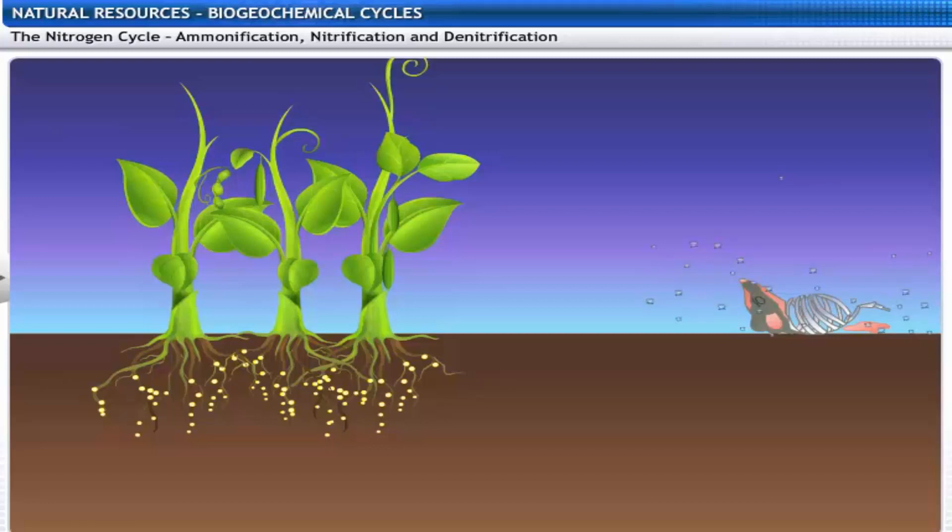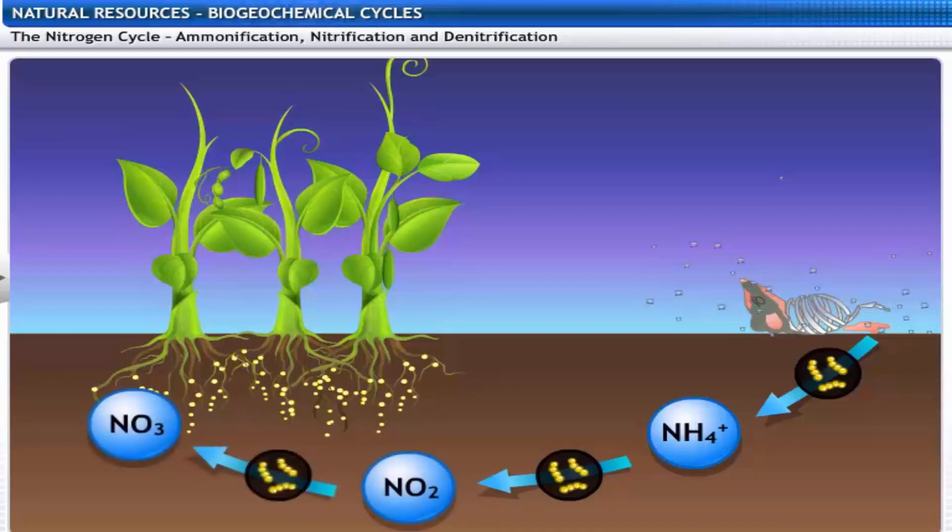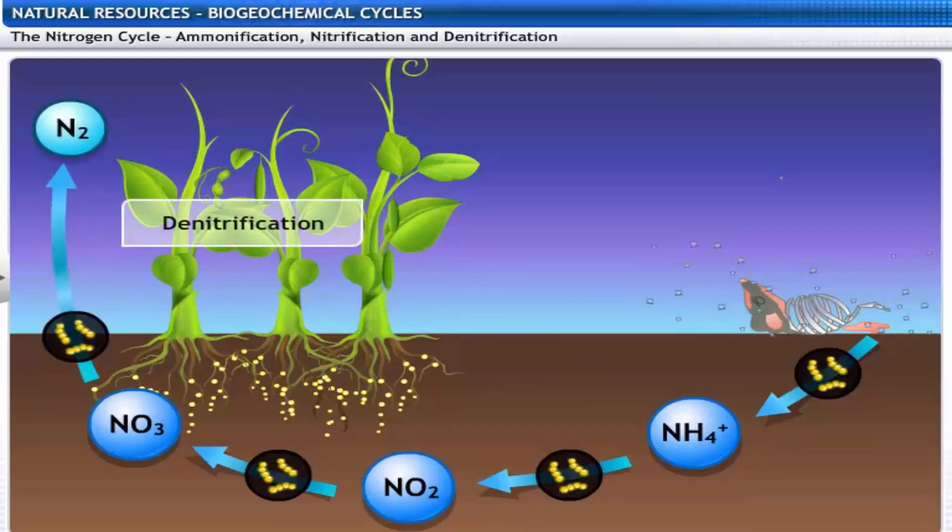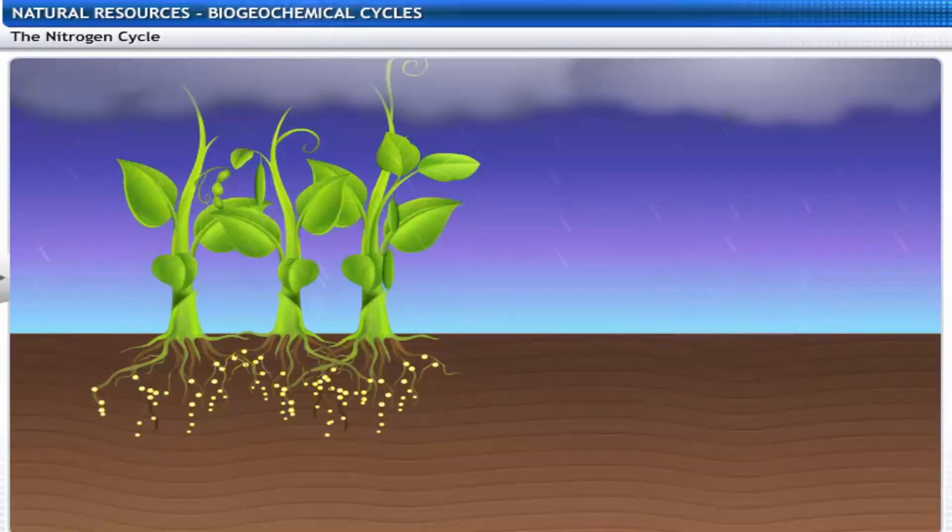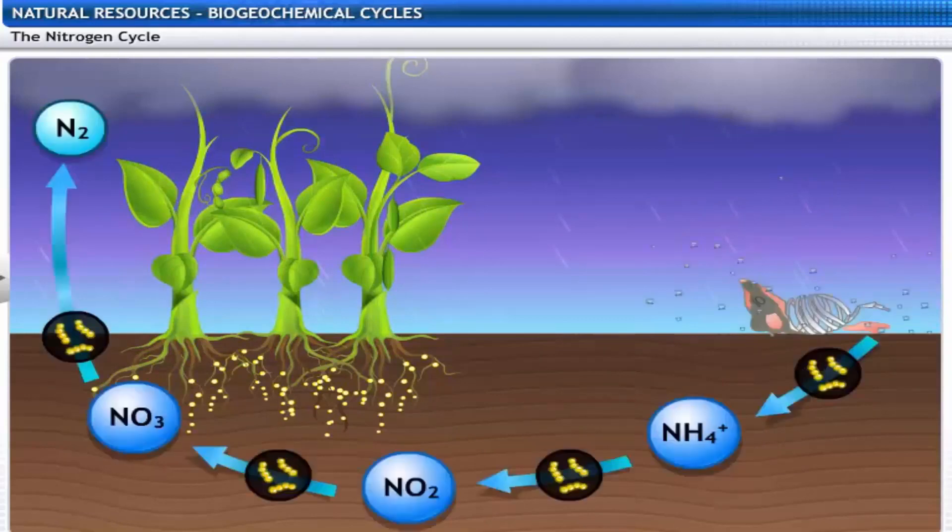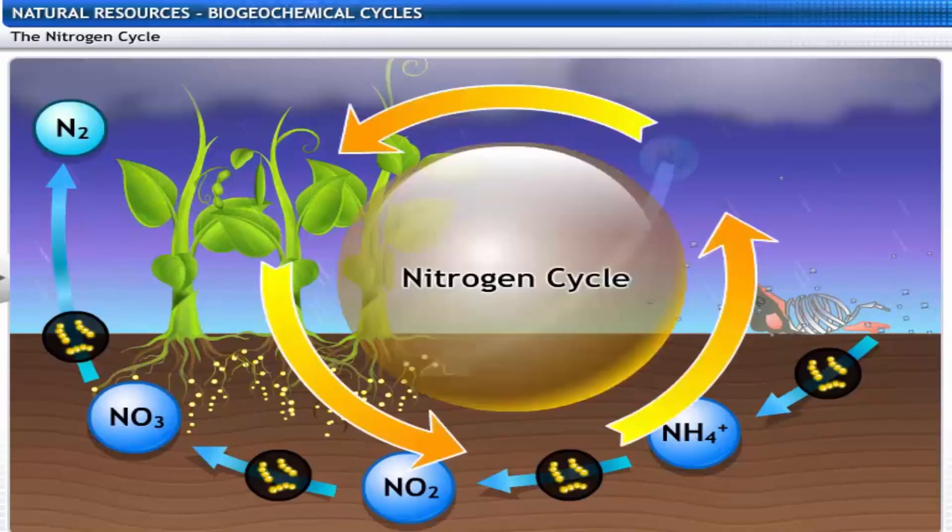Once the plants and animals die, the bacteria in the soil decompose the organic matter and release ammonia into the soil. This process is called ammonification. Thereafter, through biological oxidation, ammonia is converted to nitrite and nitrite to nitrate by bacteria in the soil. This process is called nitrification. The nitrite and nitrate are finally converted to gaseous nitrogen by denitrifying bacteria. Here's the cycle once again for you. The nitrogen cycle is the sequence in which nitrogen passes from the atmosphere to the soil and organisms, and then is eventually released back into the atmosphere.